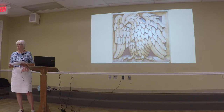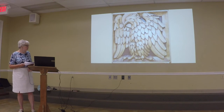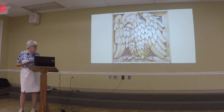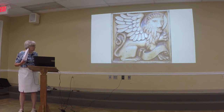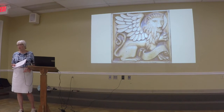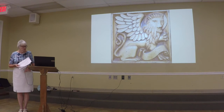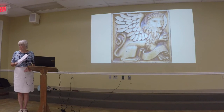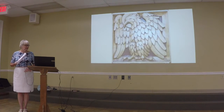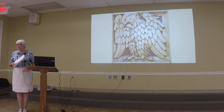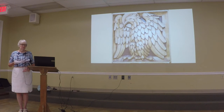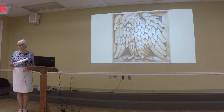Some people reverse them. Irenaeus is putting the winged lion with Mark, but Jerome and other early Christian fathers would say that's John and that the eagle is Mark. But it's very traditional, and what has come down in most tradition is that Mark gets the lion.